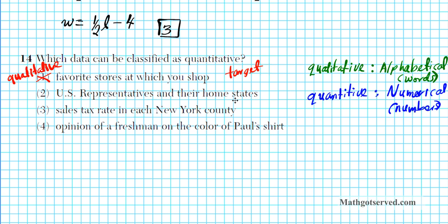U.S. representatives and their home states. Think about a U.S. representative. For example, we have Peter King. Peter is a representative for New York. Now what is this? Is this a number or a word? This is a word. So option number 2 is also qualitative. That's not what we're looking for.